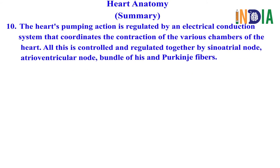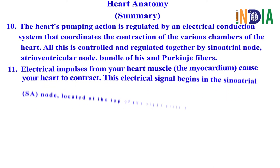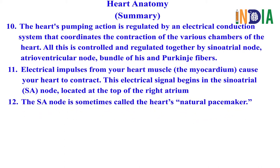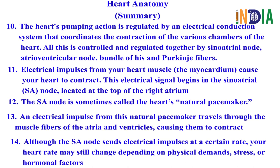The heart's pumping action is regulated by an electrical conduction system that coordinates the contraction of the various chambers of the heart. This is controlled by the Sinoatrial node, Atrioventricular node, Bundle of His, and Purkinje fibers. Electrical impulses from the heart muscle — the myocardium — cause the heart to contract. This signal begins in the Sinoatrial node at the top of the right atrium, the heart's natural pacemaker, and travels through the muscle fibers of the atria and ventricles. Although the Sinoatrial node fires at a set rate, your heart rate may still change depending on physical demands, stress, or hormonal factors.